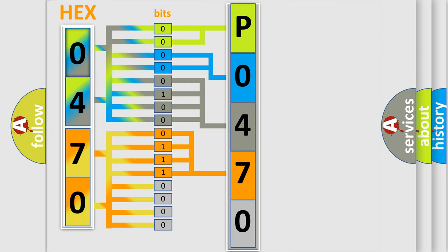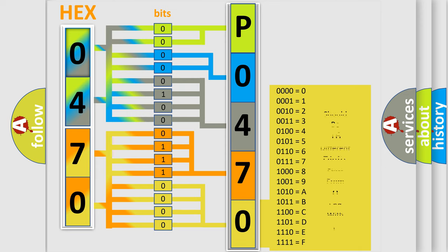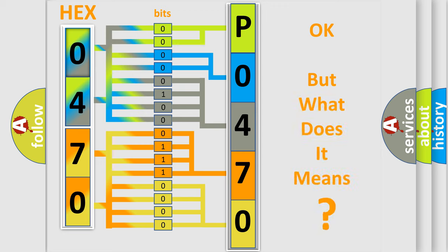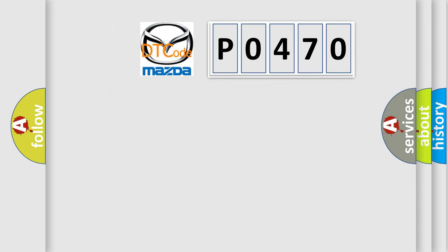A single byte conceals 256 possible combinations. We now know in what way the diagnostic tool translates the received information into a more comprehensible format. The number itself does not make sense to us if we cannot assign information about what it actually expresses. So, what does the diagnostic trouble code P0470 interpret specifically for Mazda car manufacturers?